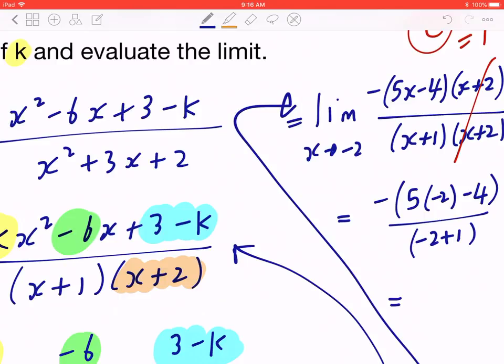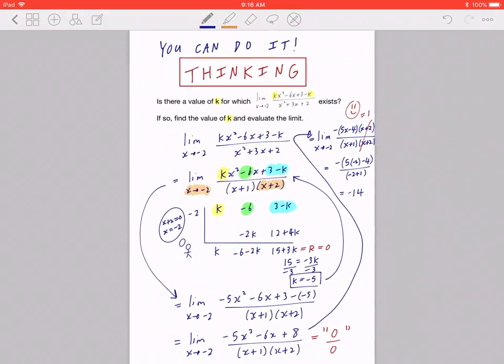And if you work this out, that's going to be negative times -10 minus 4. That's going to be 14 divided by -1, so -14. So again, we have found both the k value, which is -5, and we evaluated the limit, which is -14. I hope this makes sense.